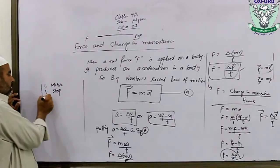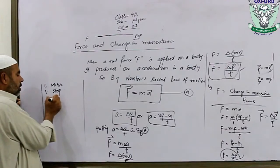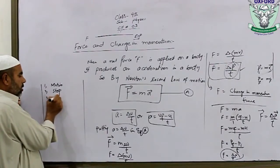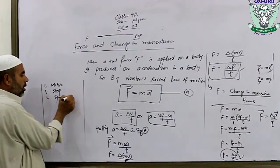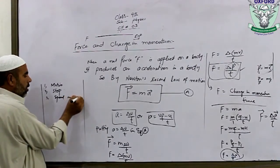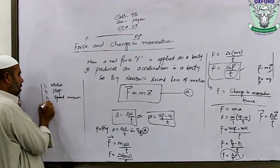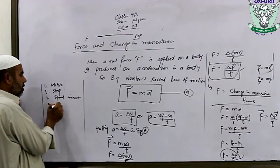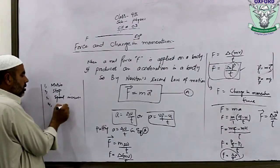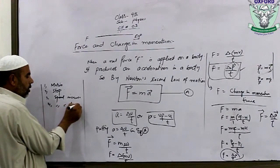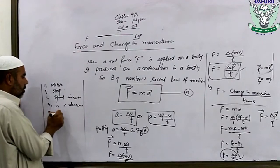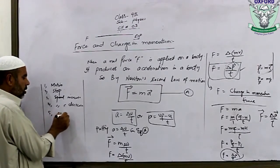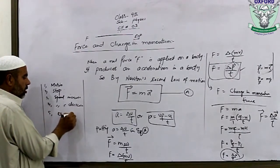Effects of force on an object: number three — speed increases. Number four — speed decreases. Number five — direction changes. The force causes a change in direction of motion.